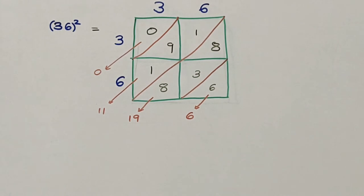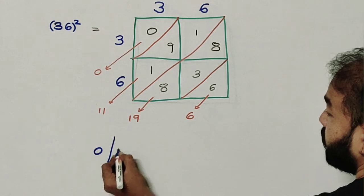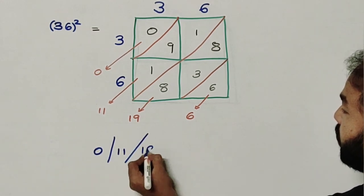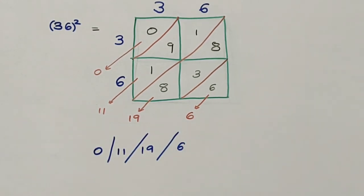So let us see what the answer becomes. So it is 0, 11, 19 and 6. So first I will write only 6.